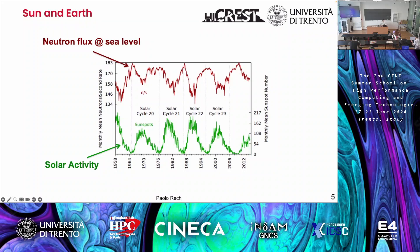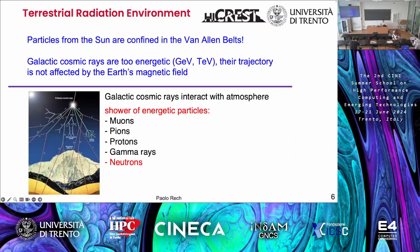Galactic cosmic rays are so energetic that they pass the Van Allen belts, hit the atmosphere, interact with the upper level of the atmosphere, and generate a cascade of particles that reach ground. These particles can be muons, protons, pions, gamma rays, but mainly neutrons — and neutrons are the bad guys here. On average, we have 13 neutrons per square centimeter per hour that reach ground. That is the amount of particles we need to care about.